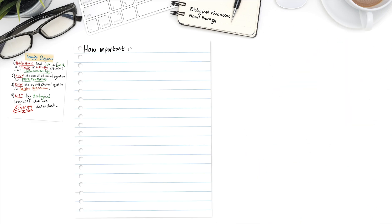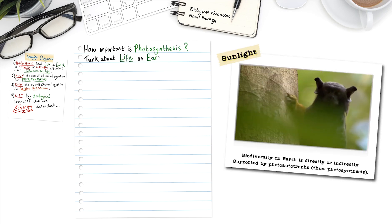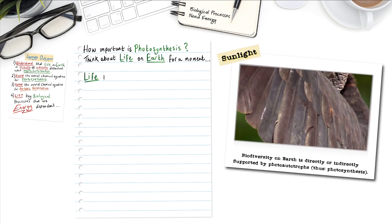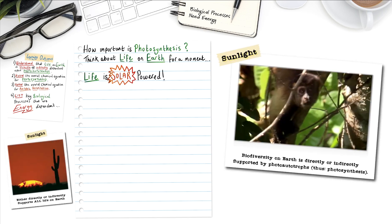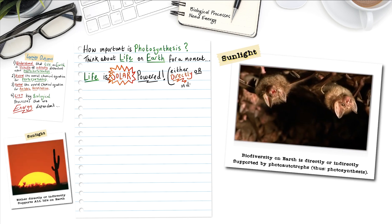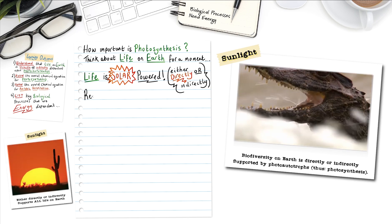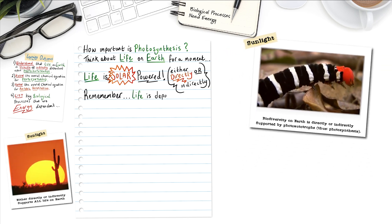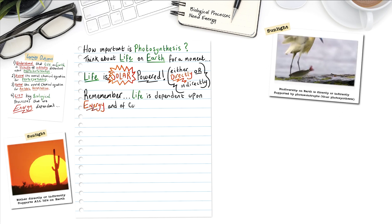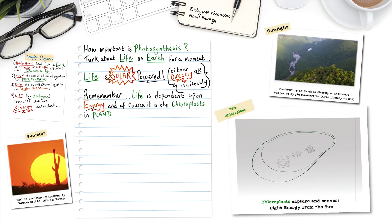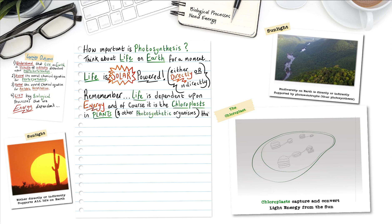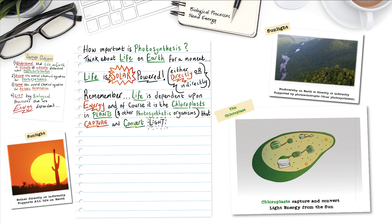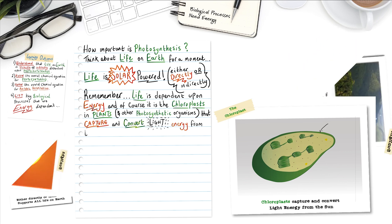How important is photosynthesis? Well, if you think about life on earth for a moment, life is solar powered, either directly or indirectly. And remember, life is dependent upon energy, and it is the chloroplasts which are found in plants and other photosynthetic organisms that capture and convert light energy from the sun.